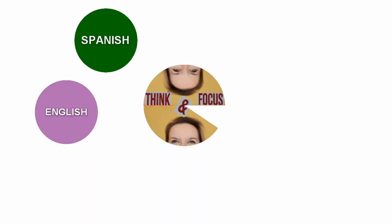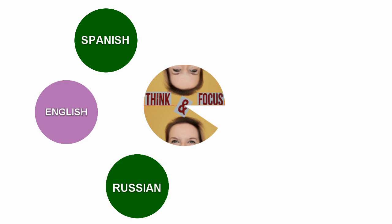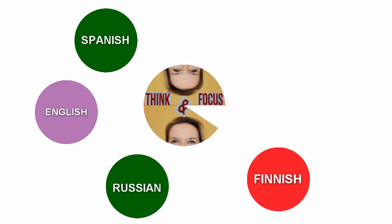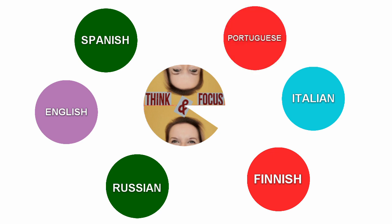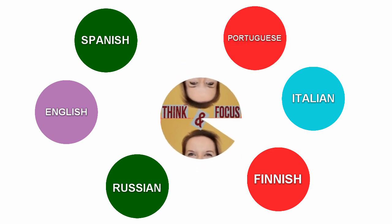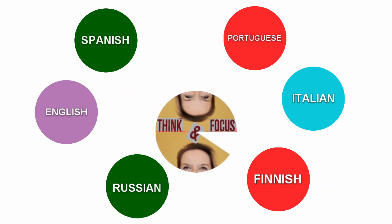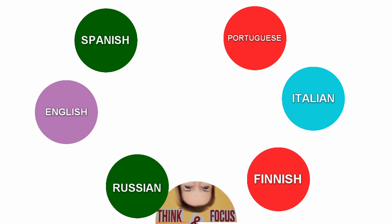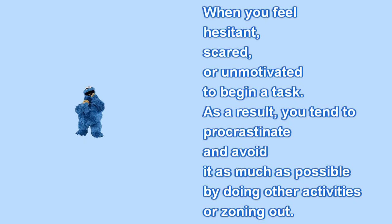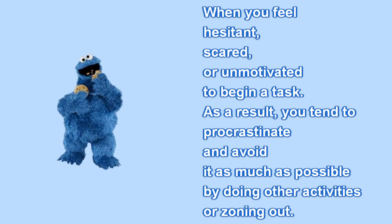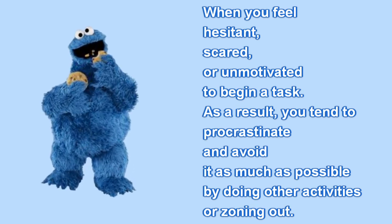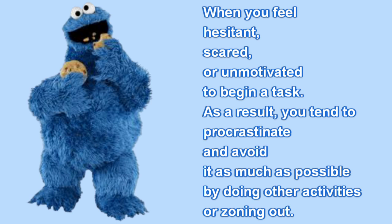Choice Paralysis, also known as analysis paralysis, happens when someone is faced with too many choices and has to make a decision. They may overthink or overanalyze, becoming overwhelmed and struggling to pick an option. Task Paralysis occurs when you feel hesitant, scared, or unmotivated to begin a task — as a result, you tend to procrastinate and avoid it by doing other activities or zoning out.